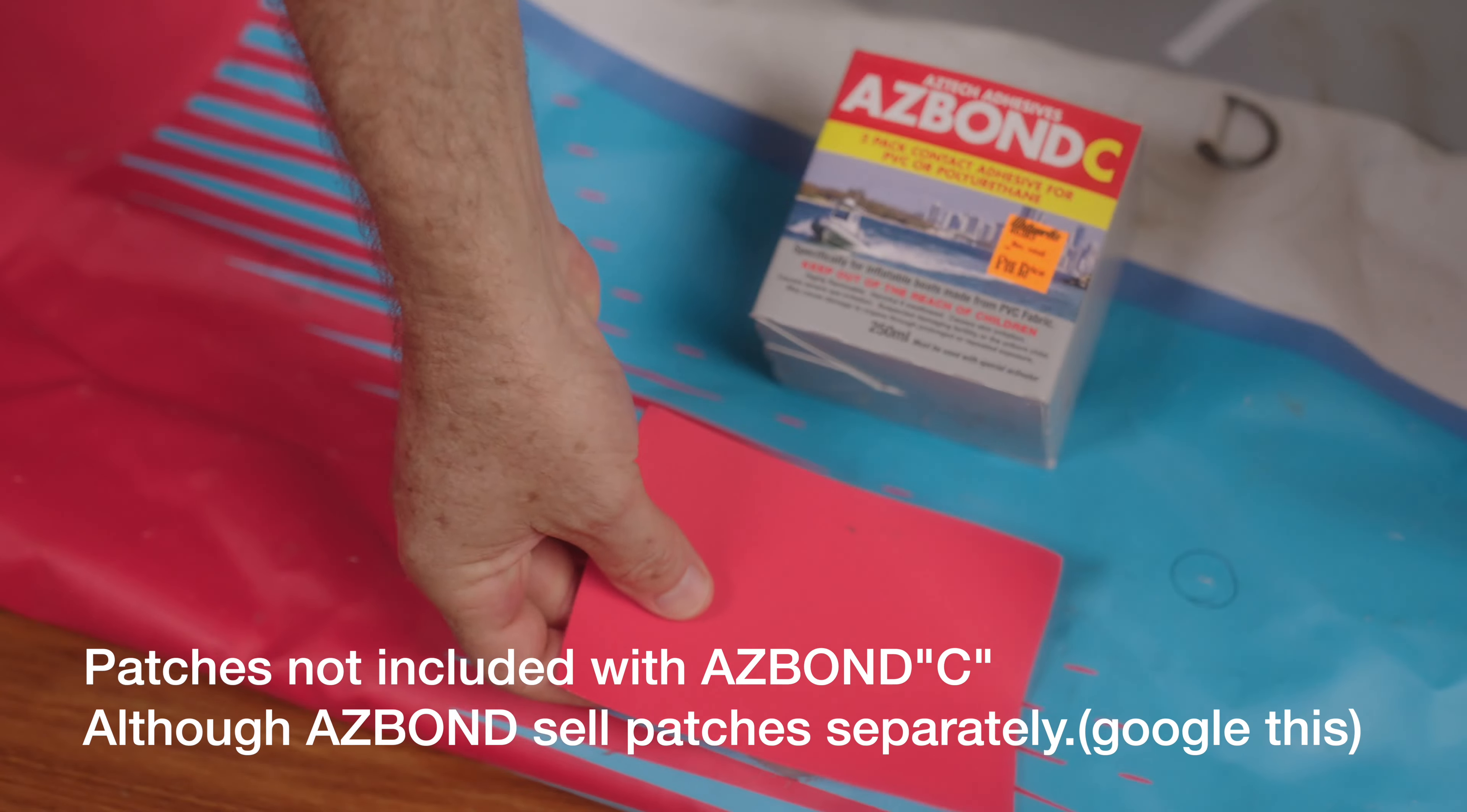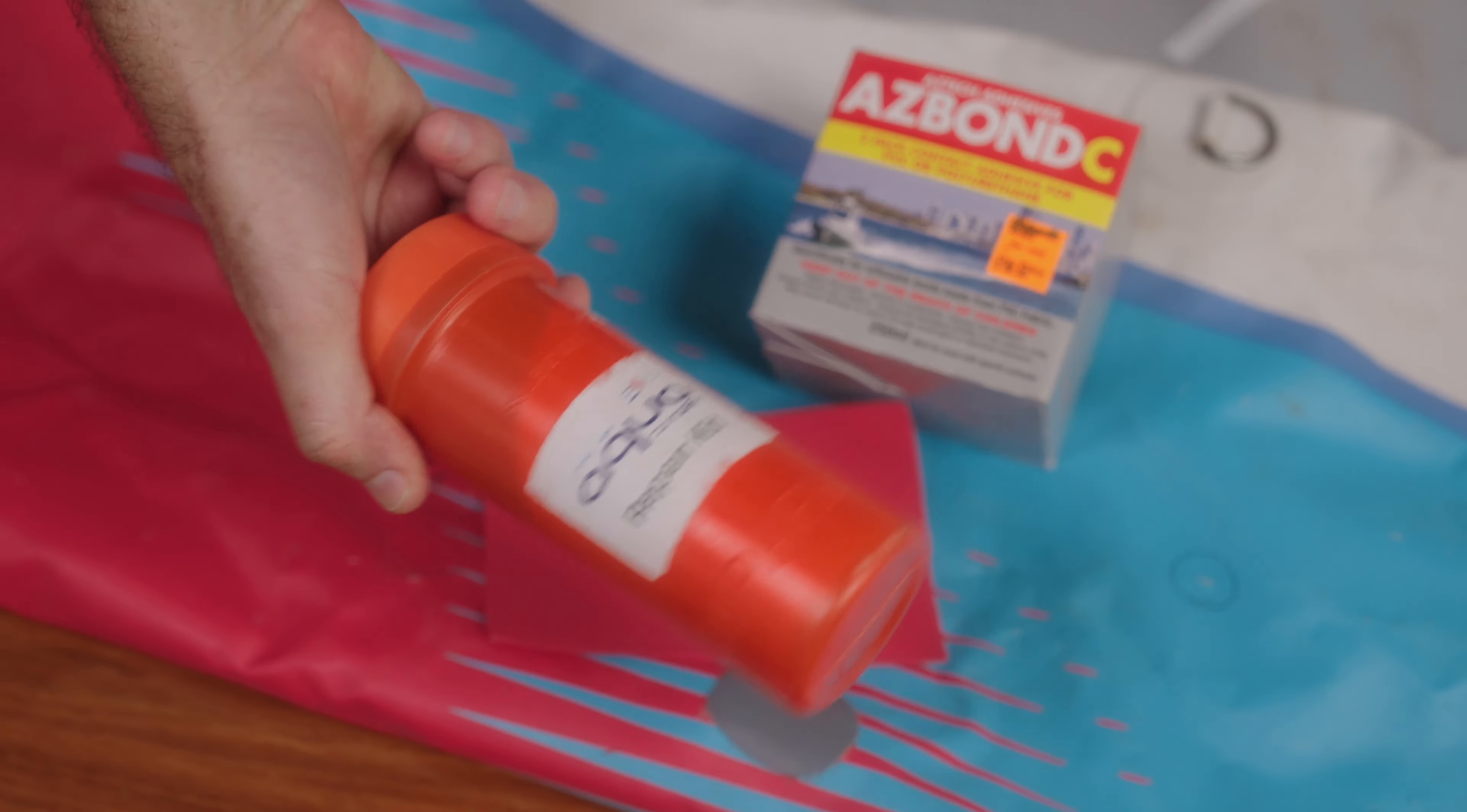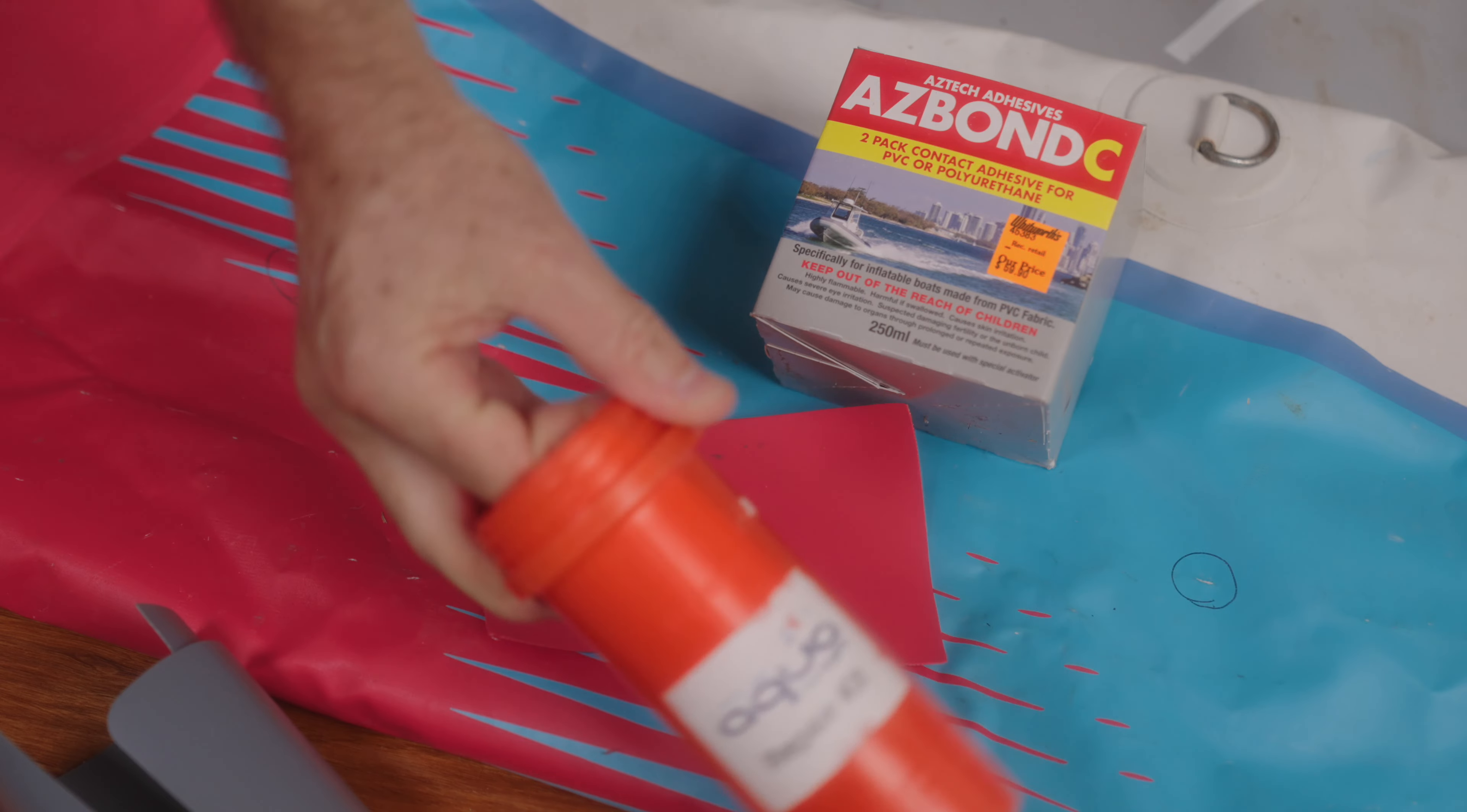It did come with a few spare patches as you can see here. There's a bag that comes with it which is vinyl. Worst case I'm going to cut this bag up and use them as patches. It also came with a previous puncture repair kit which has got some vinyl in there. So I can use that, but there was no glue in this kit.